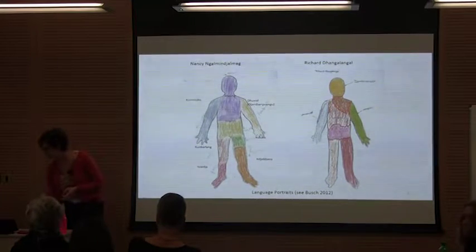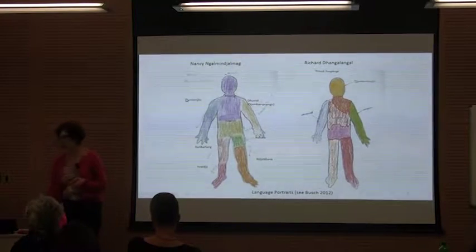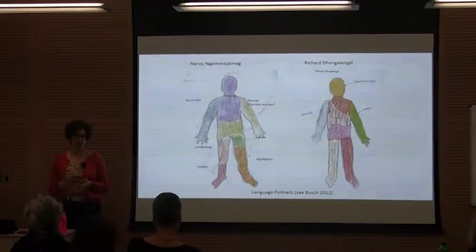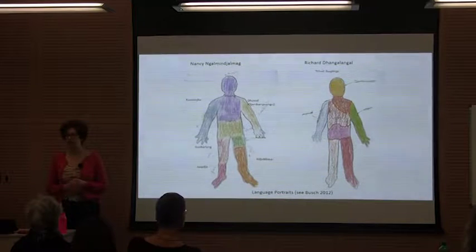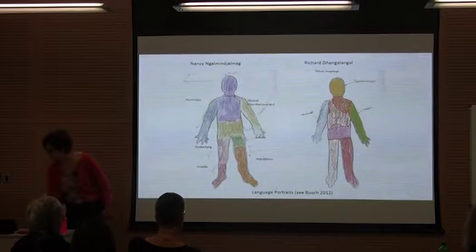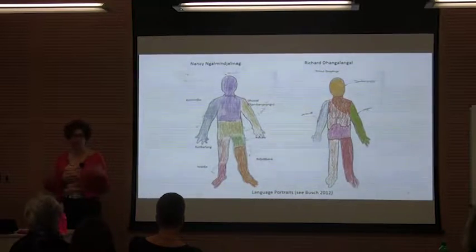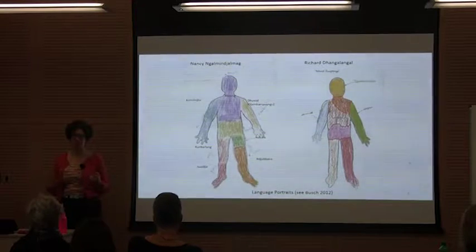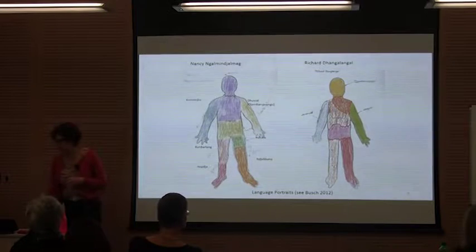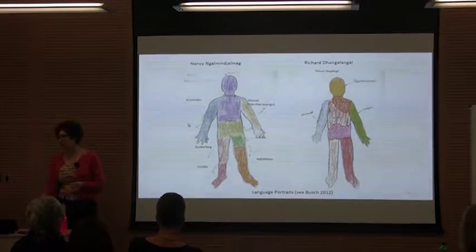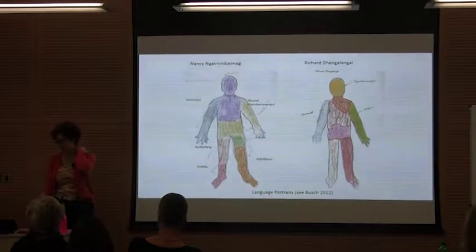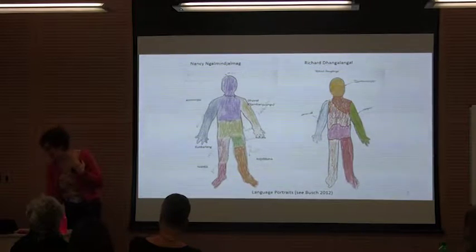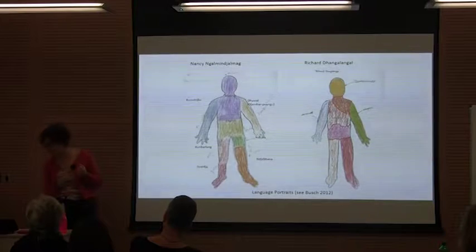These are their language portraits, and they're quite different. Nancy grew up at Wadawi, whereas Richard moved there 30 years ago from eastern Arnhem Land, which has a quite different language ecology. Nancy coloured her head and chest with Maong — she identifies strongly as a Maong speaker. She put Gunwingu on one arm, which she speaks very fluently and learned from her mother, though she only started speaking it as a teenager. Then she put Duwal, her husband's language, on the other arm, and then English — she does a lot of translating work and is very proud of her English.